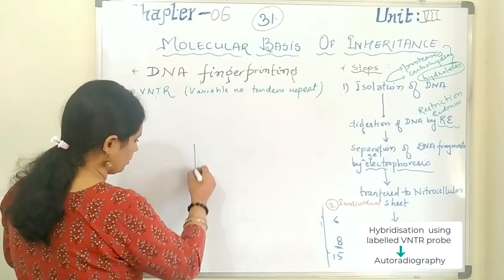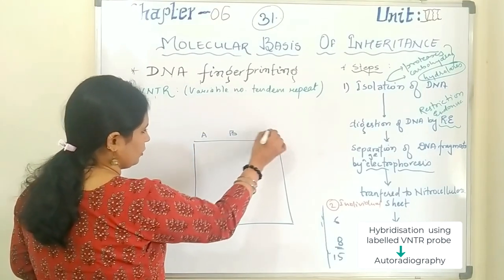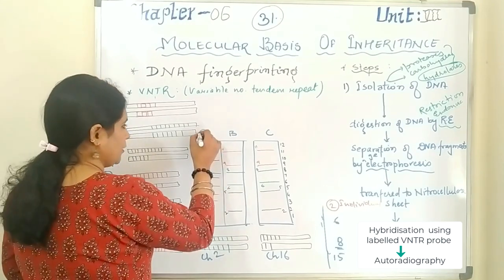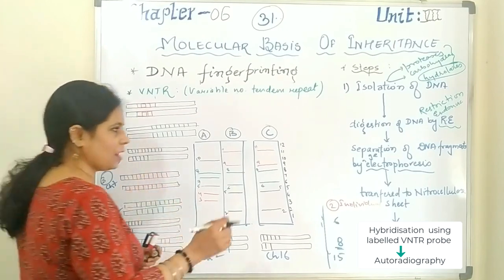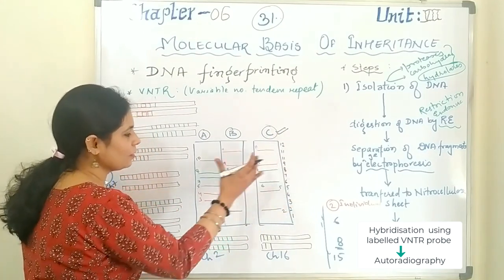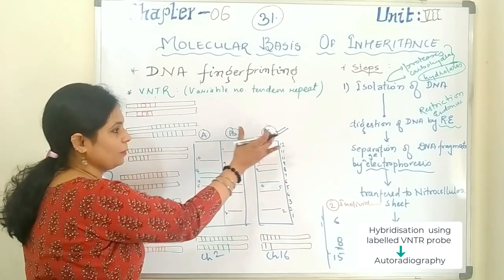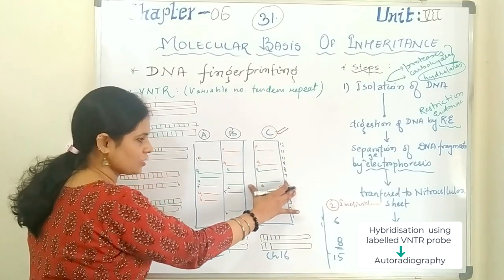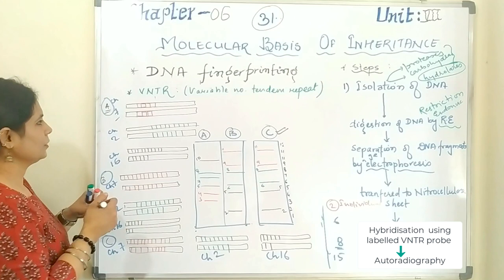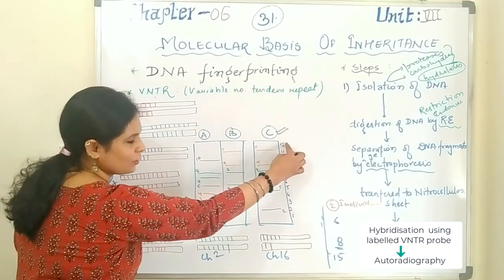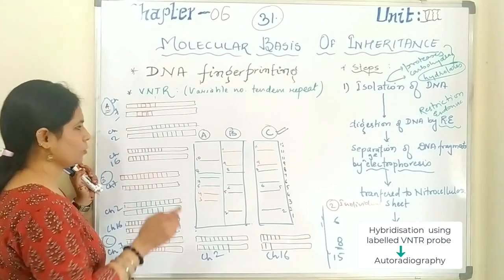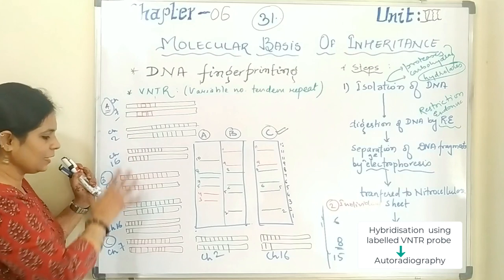Here is the sheet we obtained. On this sheet we have individual A, individual B, and individual C — I have already drawn these three nitrocellulose sheets. This is individual A, this is B, and this is C. We also have a crime scene sample. We need to match the crime scene sample to see whether it belongs to individual A or individual B. We have taken three chromosomes — chromosome number 7, chromosome number 2, and chromosome number 16 — and three individuals for comparison.